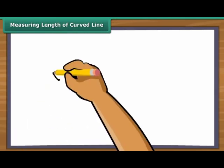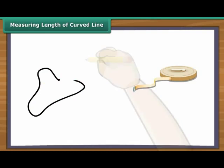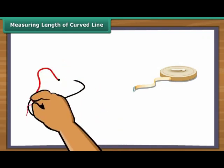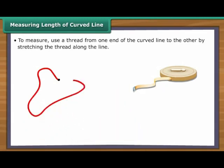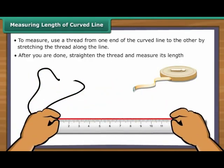Measuring Length of Curved Line. To measure a curved line, the standard measuring tape will not be enough. You will have to use a different mechanism to arrive at the correct length of the curved line. To measure, you will use a thread along the line of the curve from one end of the curved line to the other end by stretching the thread along the line. After you are done, straighten the thread and measure its length. You will know the length of the curved line accurately.